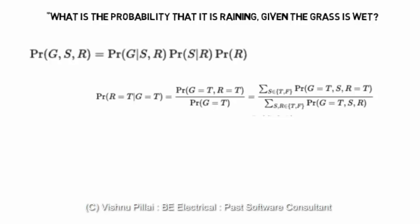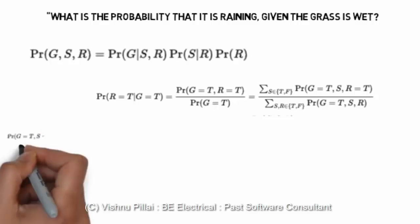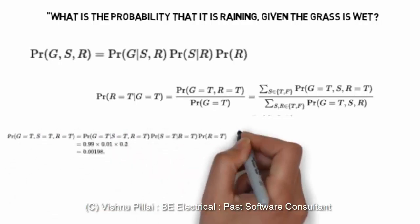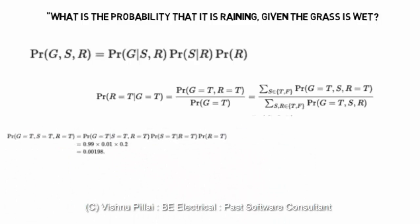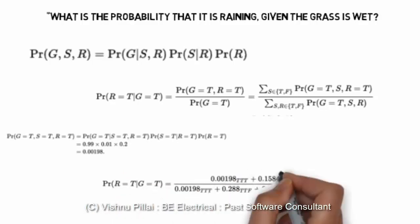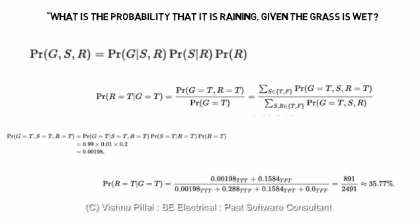A simple way to calculate the conditional probability: the grass is wet, the sprinkler is on, and the rain is true. Based on the above formula, if you compute the values from the previous table, it can be found that the probability of this is 0.0198. So the chance that all three things are happening together is 0.0198.